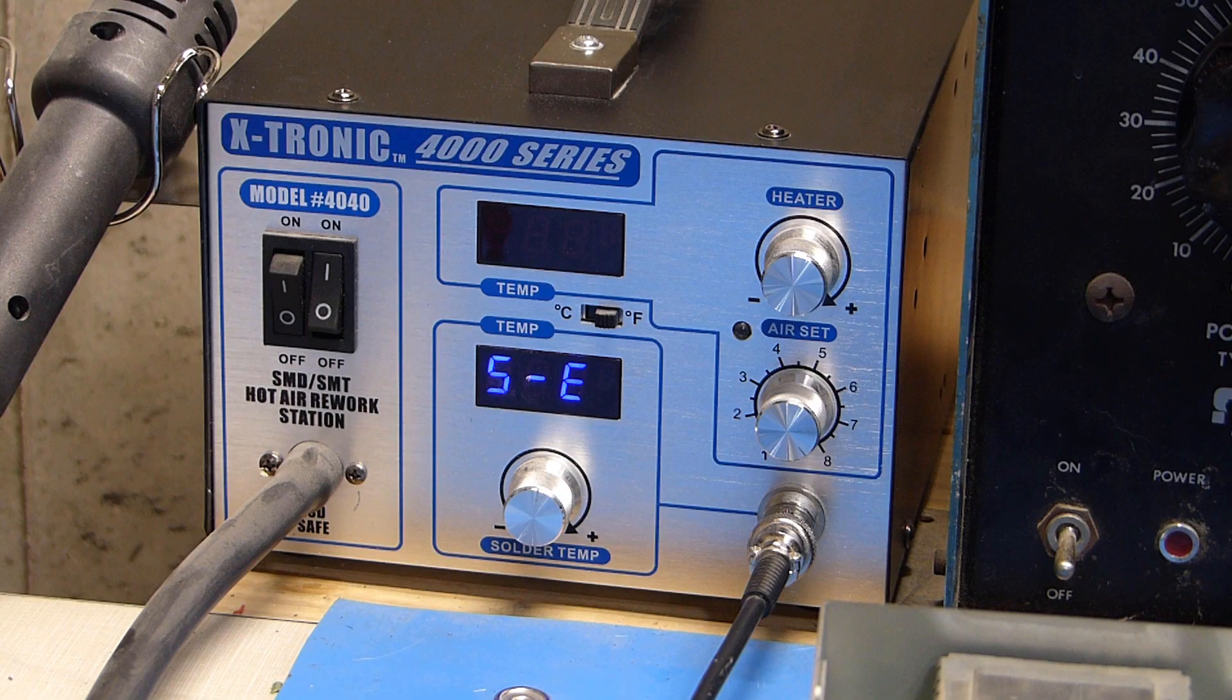S-E or maybe that's 5-E but either way that error code means that it is time to replace the heating element in the soldering iron here.